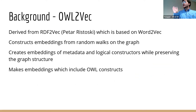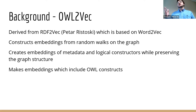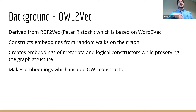The embedding tool I used was Owl2Vec. Pablo was talking about Edge2Vec and I see presented a lot of different embedding methods — this is another one. The advantage of Owl2Vec is that it's similar to Onto2Vec, but it also creates embeddings of metadata and embeddings of logical constructors, so it preserves semantics and has the graph structure. OWL constructs are included in the embeddings, meaning you can add semantics when inferring links in your graph structure.